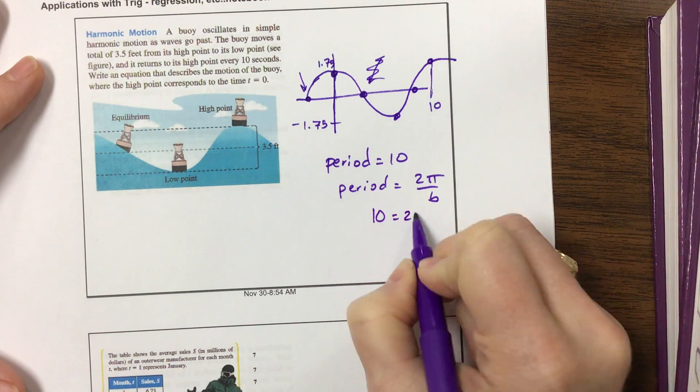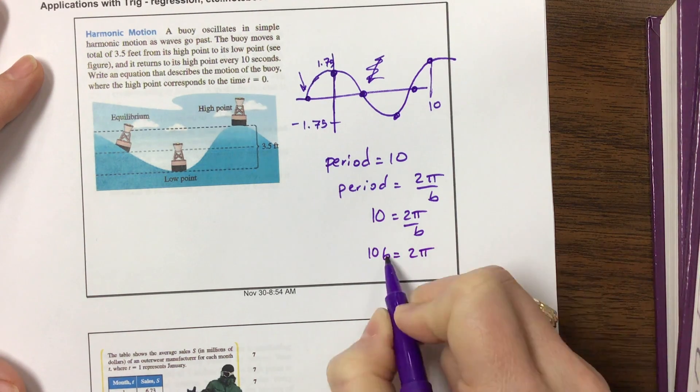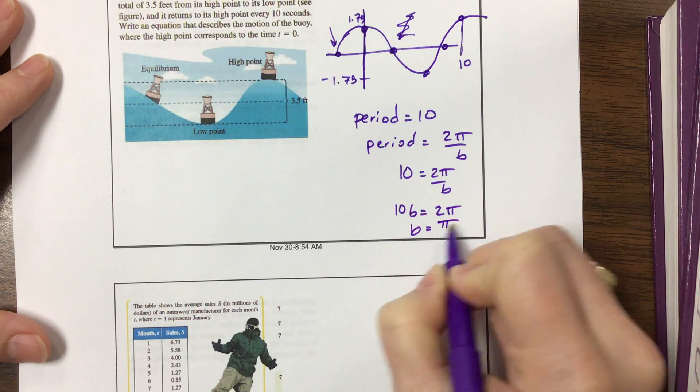So if I have 10 equals 2π over b, I have 10b equals 2π. That's a b, not a 6. So then I have b equals π over 5.